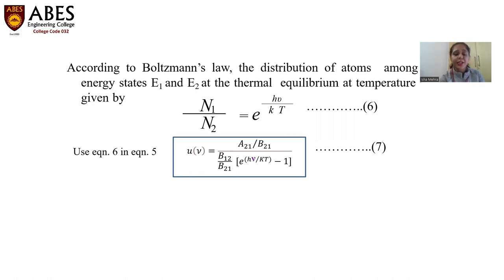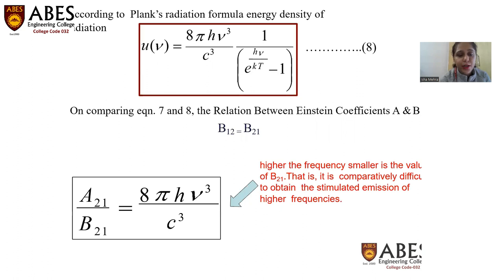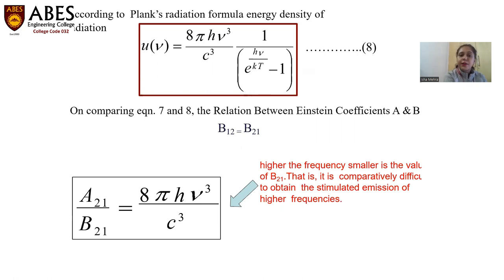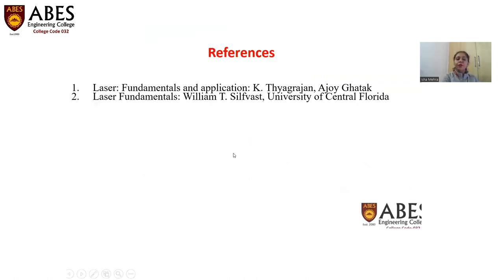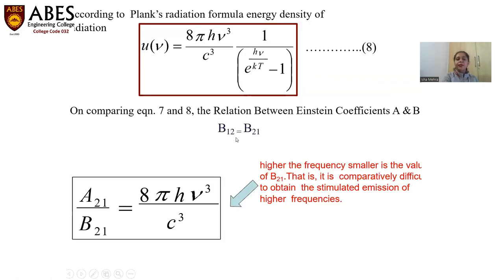This is the energy density calculated through probability distribution. There is a standard energy density formula — Planck's radiation formula — given as equation 8. Relating the previous energy density equation with this standard formula, we are going to get a result.